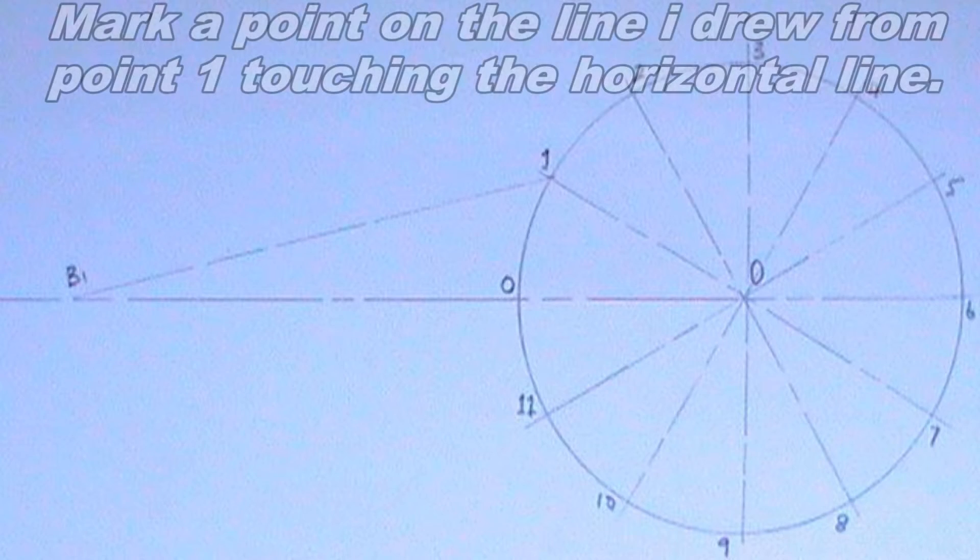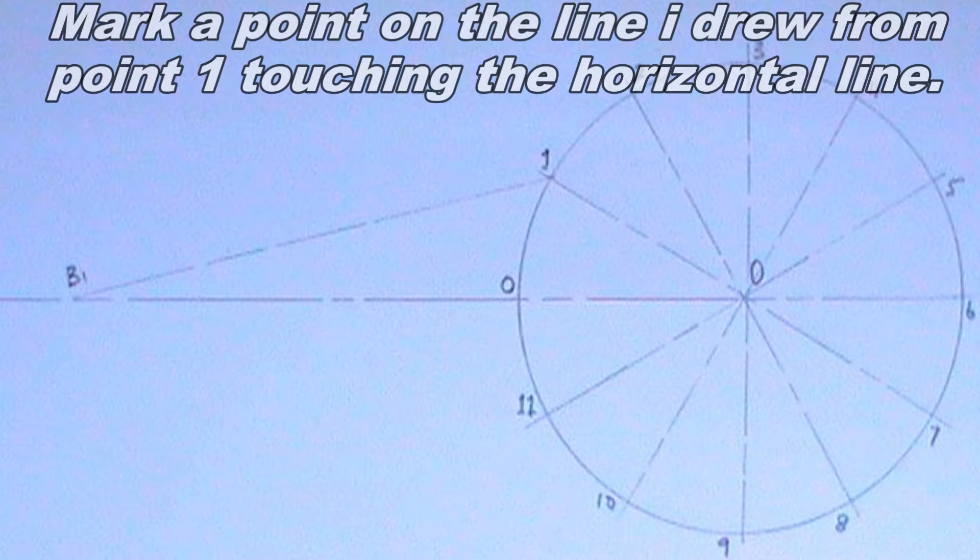I will mark a point on the line I drew from point 1 touching the horizontal line. The point I will mark will be 40 millimeters from point B1. I will label the point P1.